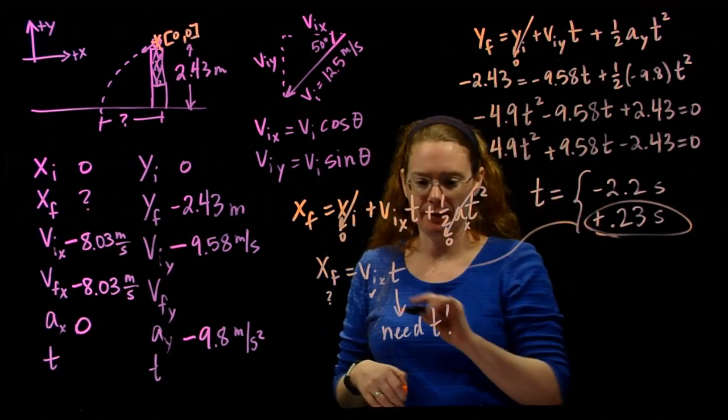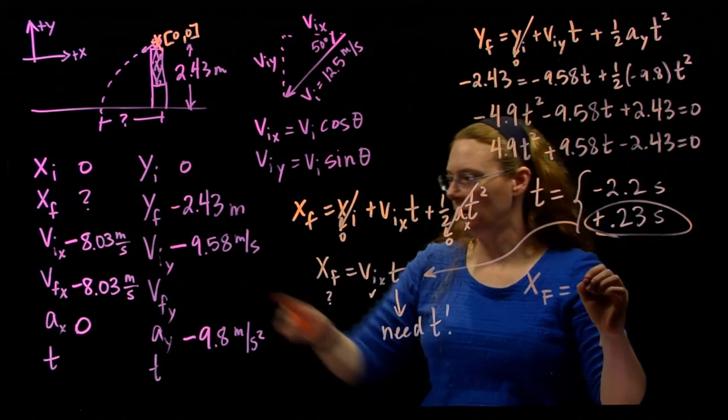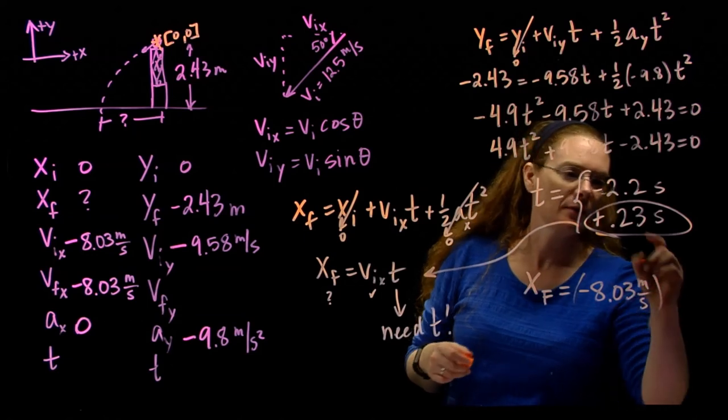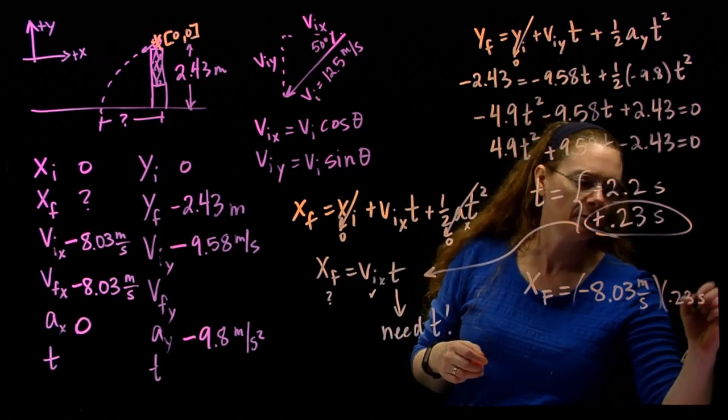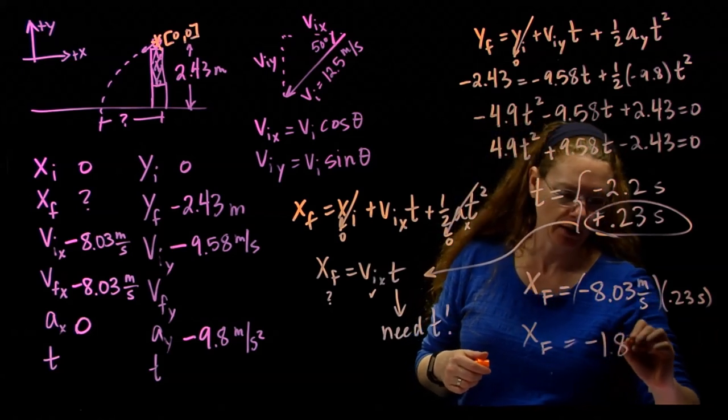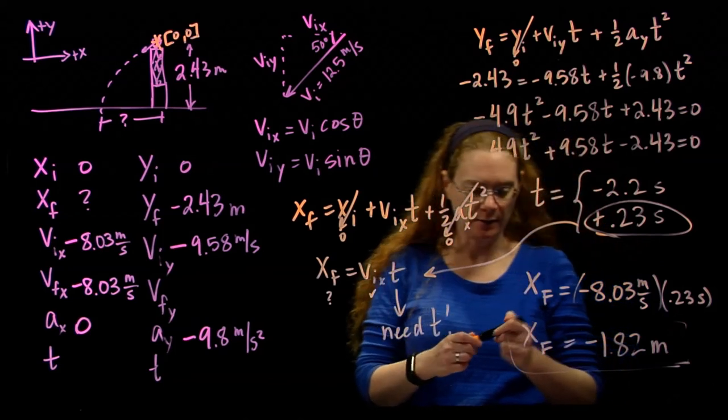X final is, it's going to be negative 8.03 meters per second times 0.23 seconds. If you do the math, you will come up with negative 1.82 meters. Alright, so I think that's my answer. Is that reasonable?